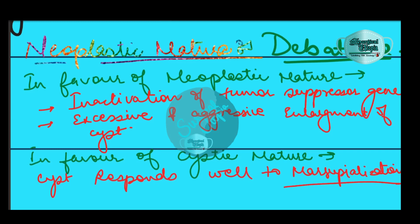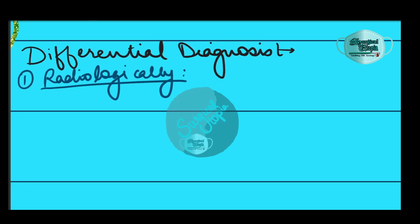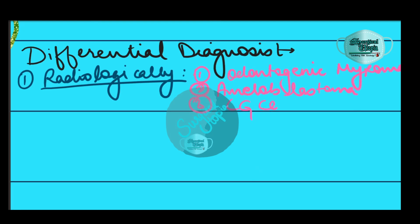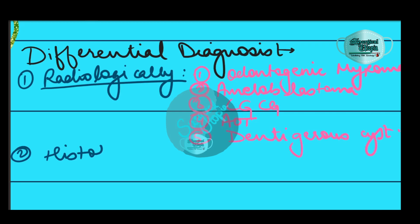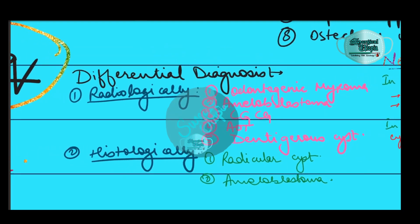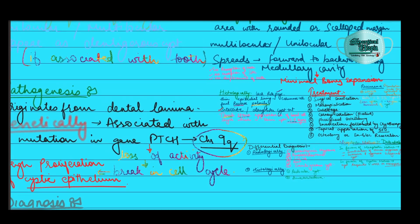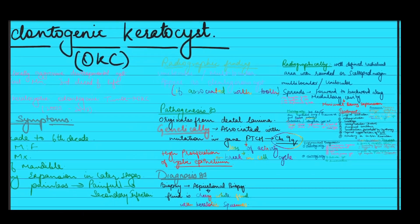Radiologically, the differential diagnoses of OKC include odontogenic myxoma, ameloblastoma, central giant cell granuloma, adenomatoid odontogenic tumor, and dentigerous cyst. Histologically, orthokeratosis, radicular cyst, and ameloblastoma can resemble OKC. That was all about odontogenic keratocyst — see you in the next video, take care.